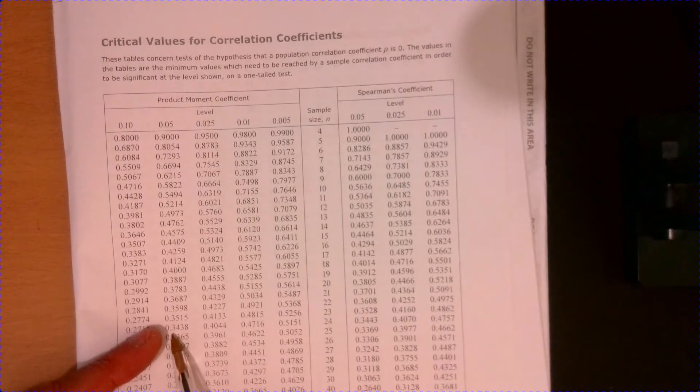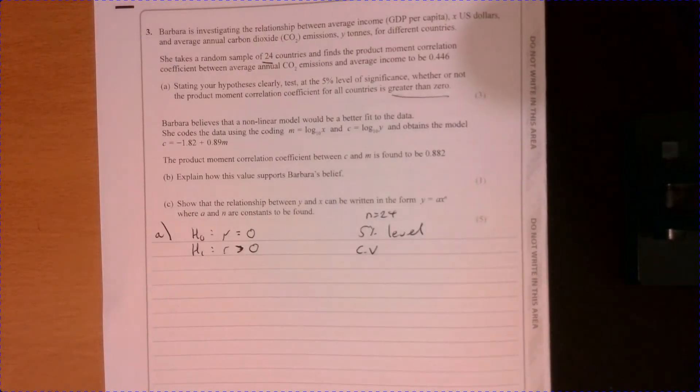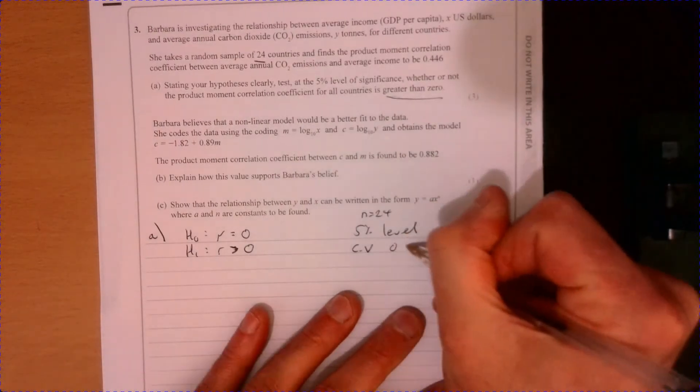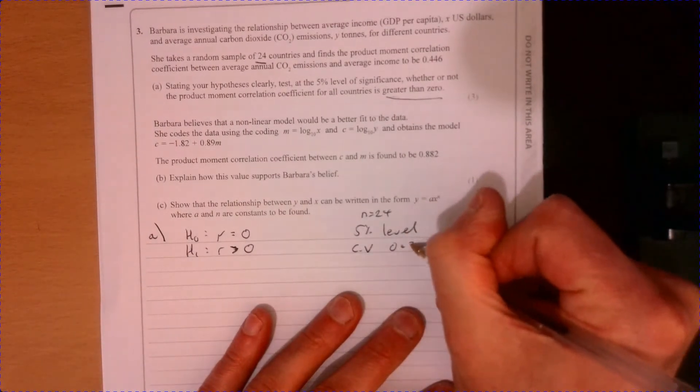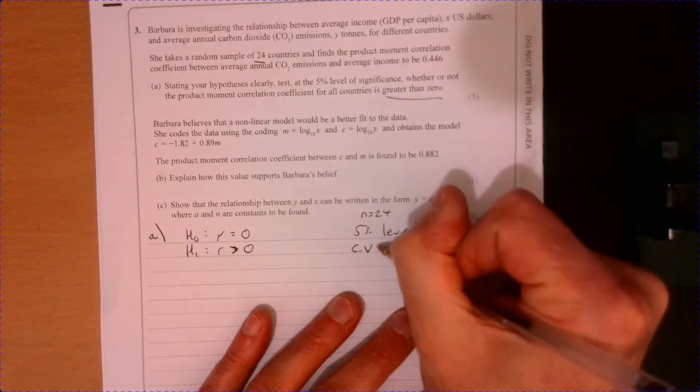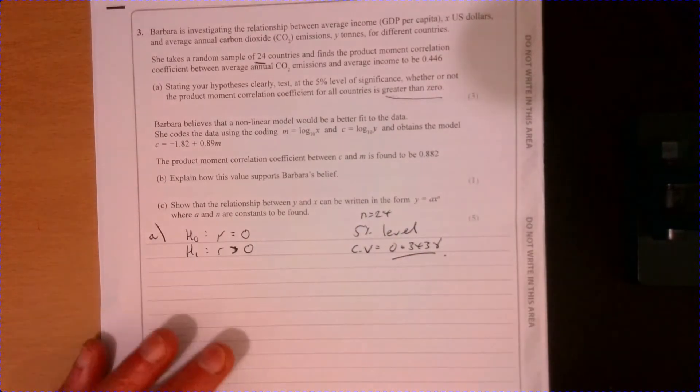And so this is our critical value, 0.3438. So we've got that value from our table. So it's nothing to work out. We just need to look it up.